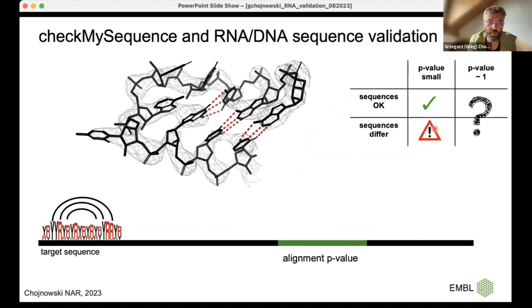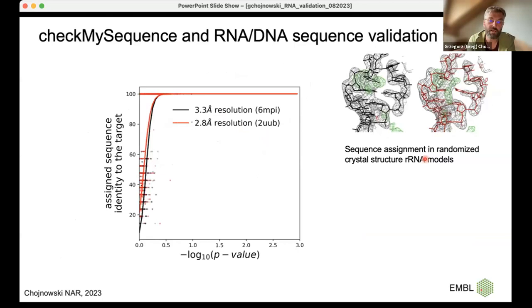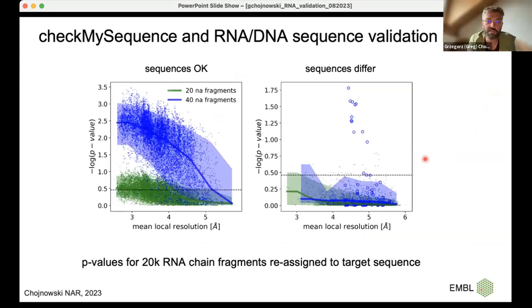Check My Sequence for nucleic acids works similarly to the protein version: instead of a standard backbone model, it uses base pairing information and a footprint of sequence at the purine/pyrimidine level. The p-values and the model of significance testing are exactly the same. Crucially, like for proteins, this score does not depend on local resolution in cryo-EM structures — ruling out one of the difficult-to-assess parameters. And again, there are outliers worth examining in detail.